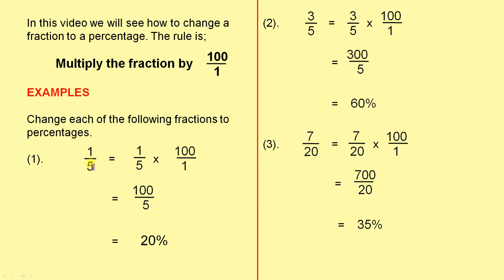The first one is one-fifth. So we have one-fifth times a hundred over one, because that's what the rule says. One times a hundred is a hundred, five ones are five. Five divided into one hundred goes twenty times, so the answer is twenty percent. So one-fifth is twenty percent.